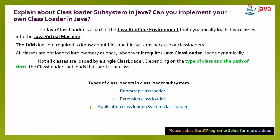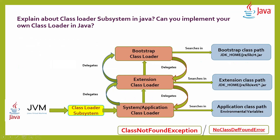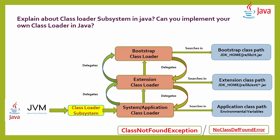We will explain in detail with a pictorial diagram how the class loaders work and which pattern they follow. The JVM looks at and loads the class loader subsystem. Initially, the class loader subsystem calls the Application class loader. The Java class loader subsystem follows the delegation model, also called the delegation algorithm, as well as the visibility algorithm.